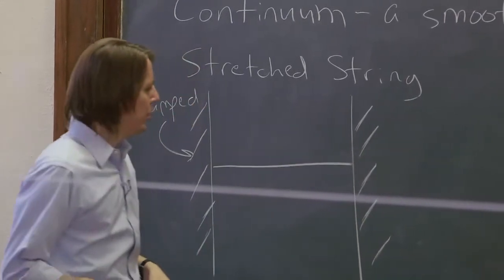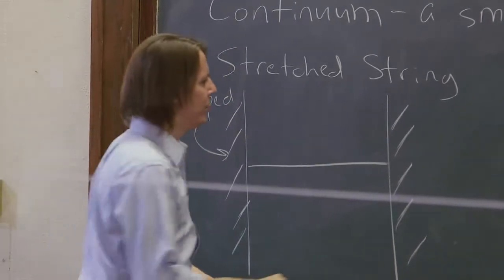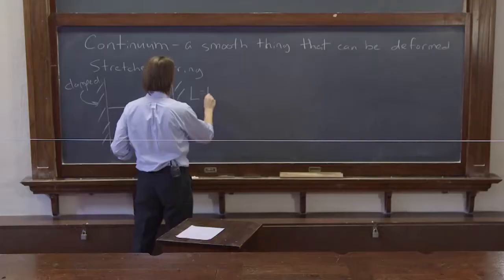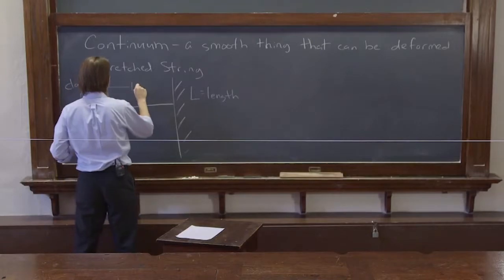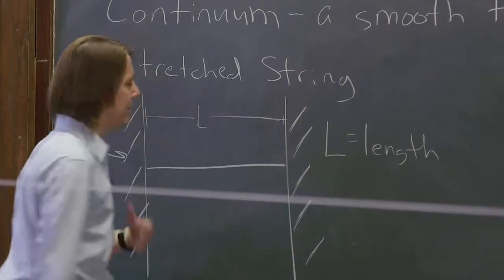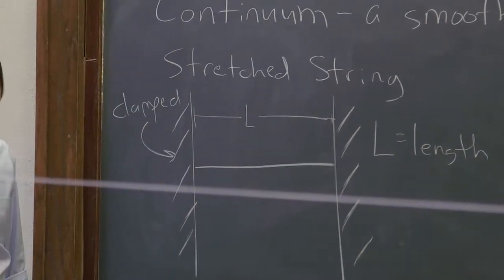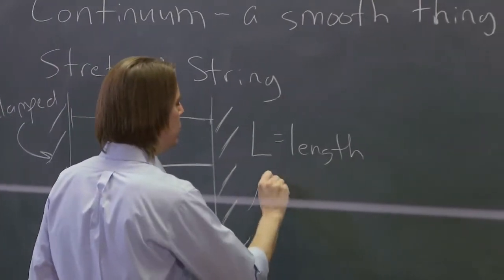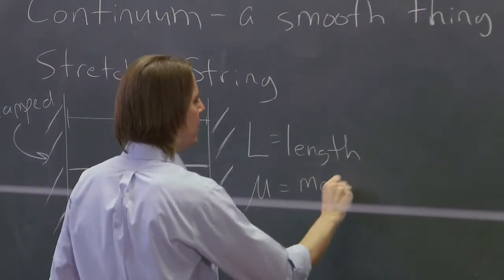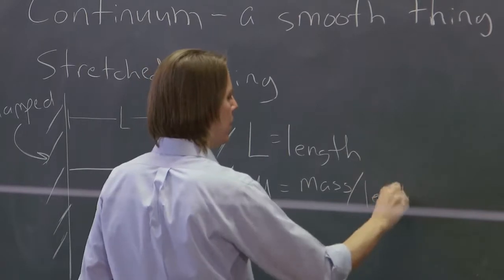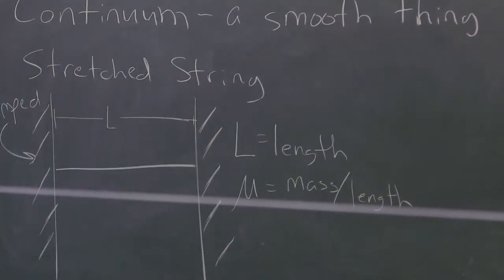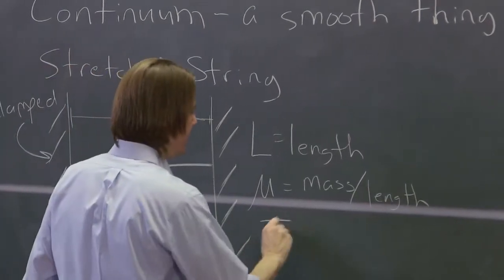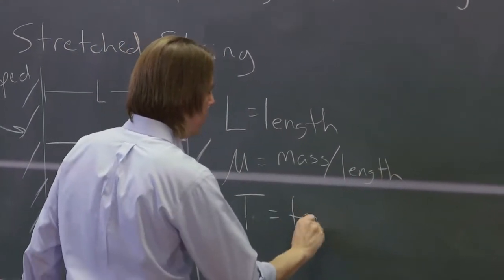And you characterize it with three parameters. So it has a length. And that's the actual length from here to here. It's not the unstretched length. It's basically just the length between the two clamps. It has mu, which is its mass. But you give that per unit length. So an intrinsic parameter for the string. And then it is under a tension, T, in newtons.